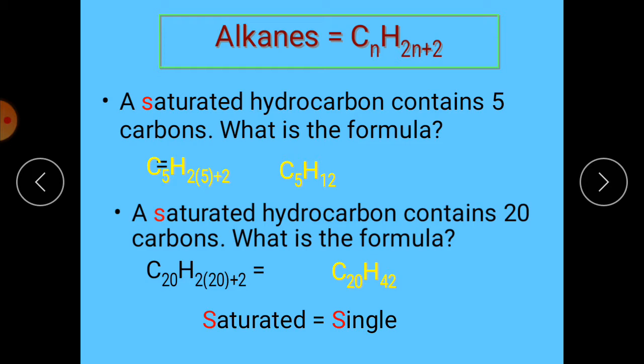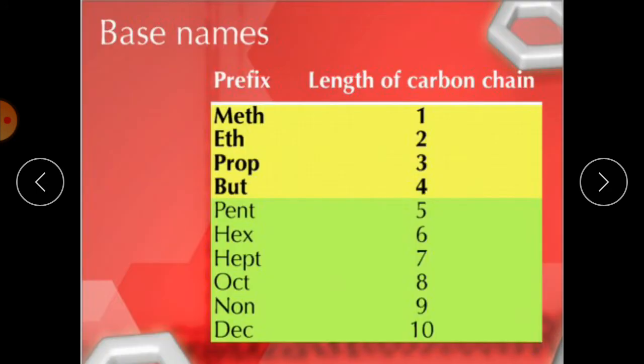If they have single bonds, these compounds are known as alkanes, and these compounds are known as saturated compounds. Hydrocarbons have two types: saturated hydrocarbons and unsaturated hydrocarbons. Saturated hydrocarbons are hydrocarbons whose carbon-carbon bonds are all single bonds. We are discussing saturated hydrocarbons because they have single bonds.